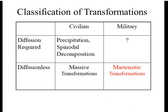These are called military transformations because they take place in a military manner — the atomic movements are less than one atomic spacing, and atoms change their position in a coordinated manner, unlike civilian transformations where atomic movements are random.